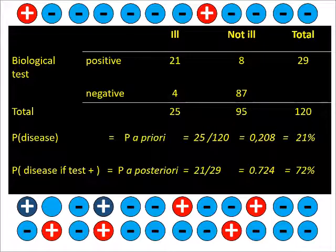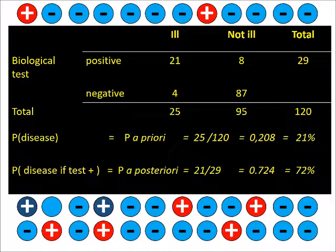So despite the imperfections of the test, we have improved the probability of the disease from 21% to 72%. But all these calculations are only possible because I have shown you who was ill and who was not ill.